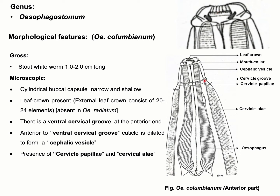Here you can see the ventral cervical groove at the anterior end of this parasite. Anterior to this cervical groove, the cuticle is dilated to form a cephalic vesicle, which is another cuticular modification.